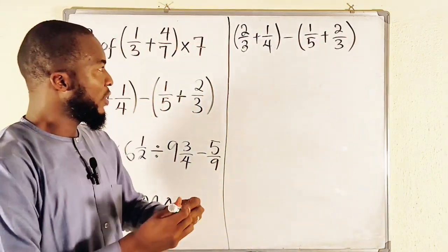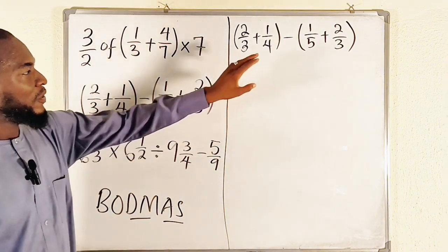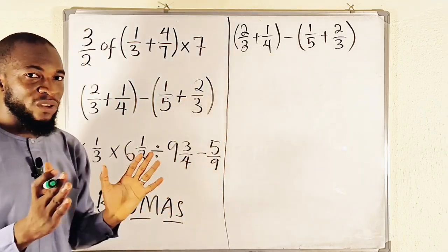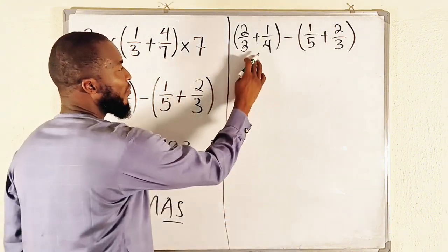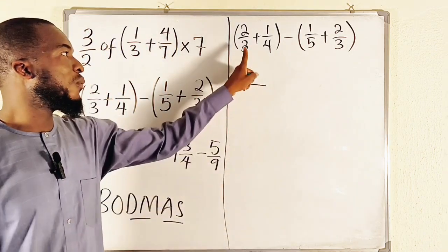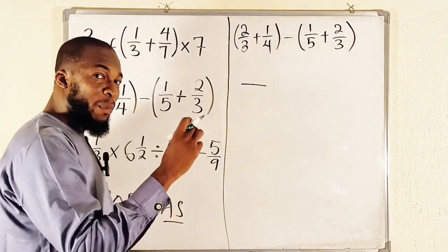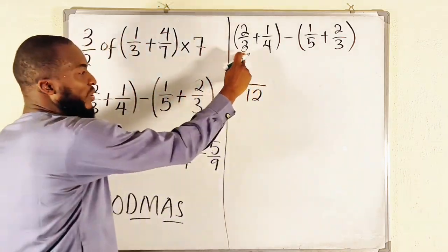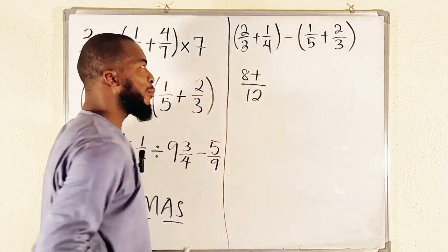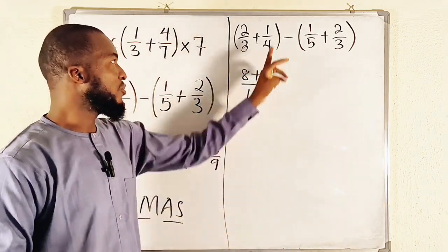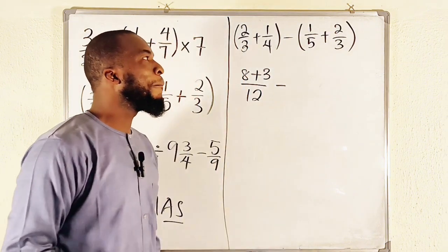Let's move on to the second one. We have separate fractions in parentheses, so we start with B — the bracket. Forget about the outside; simplify these two bracketed groups separately before you subtract, because they are the content under the parentheses. For the first bracket, draw a line. What is the LCM of 3 and 4? The smallest number both 3 and 4 can go into without remainder. That number is 12. 3 into 12 is 4 times, so 4 times 2 is 8, plus 4 into 12 is 3 times, so 3 times 1 is 3.